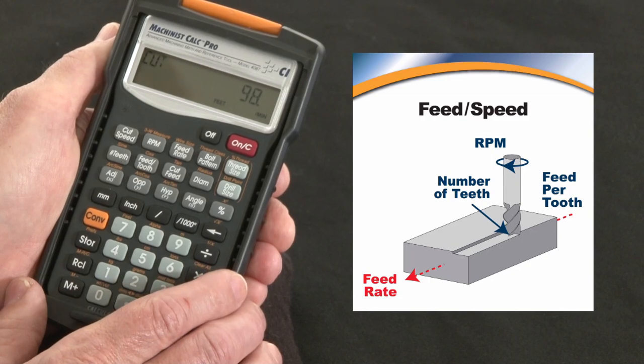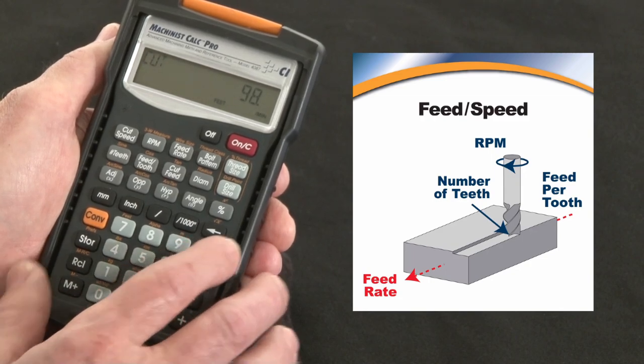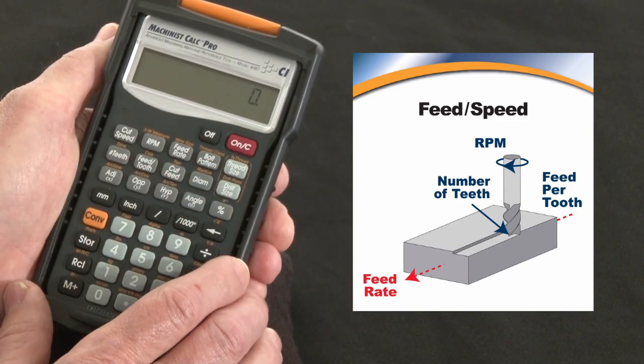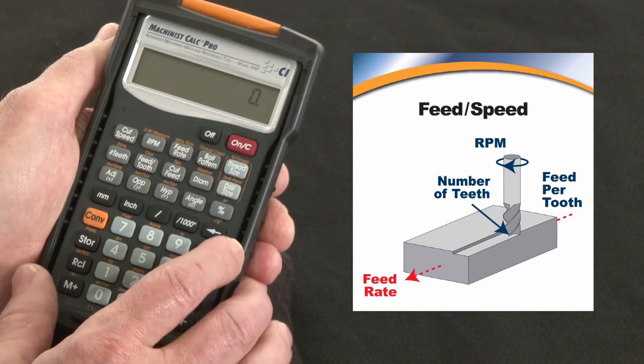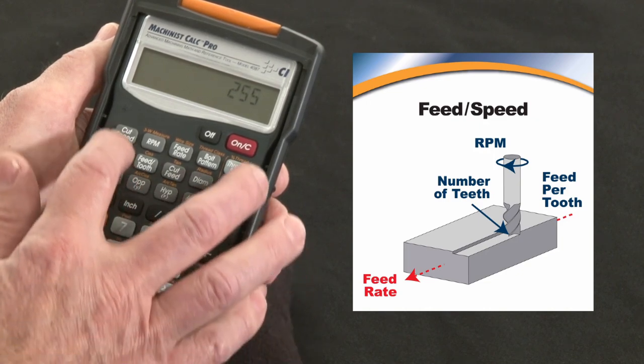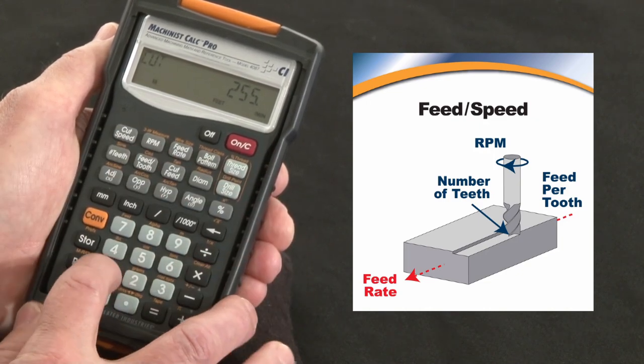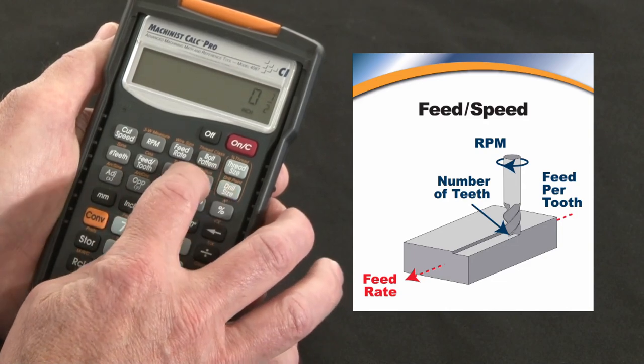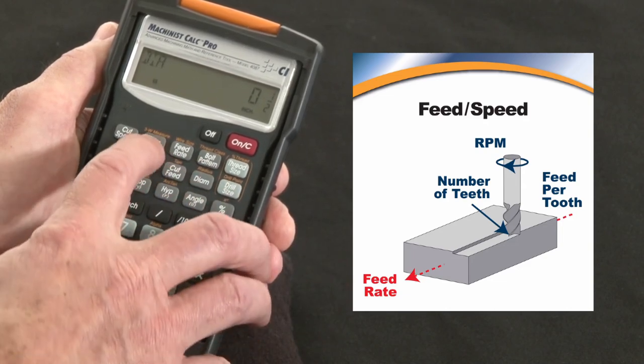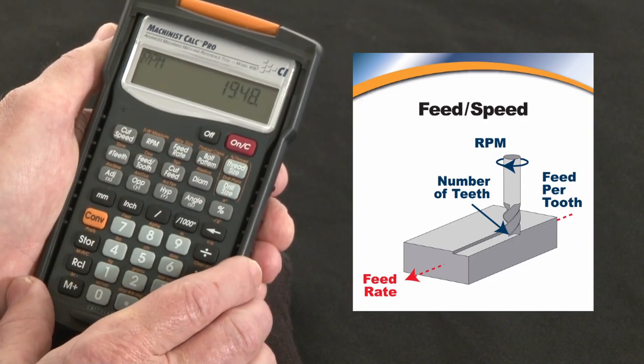You're going to be able to go about 98 surface feet per minute. You can also calculate it the other way. Say the spec sheet on the material you're using recommends you go at 255 surface feet per minute, you're using that same half-inch diameter tool - what would our spindle speed be? Hit the RPM key and find out: 1948.